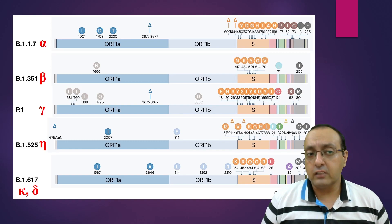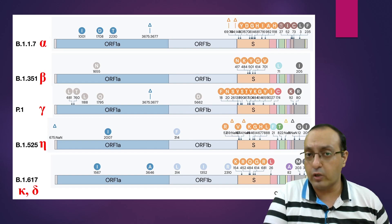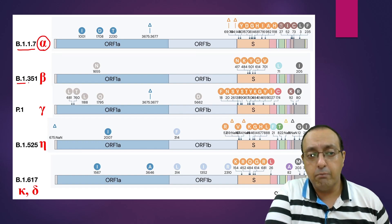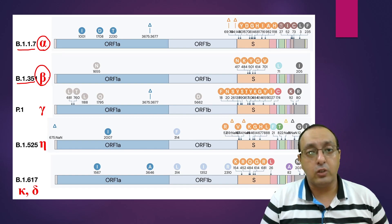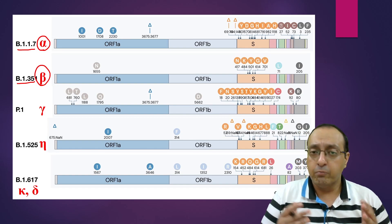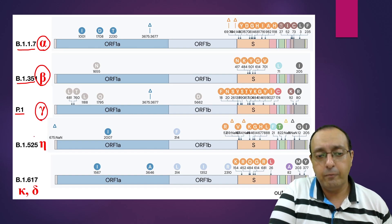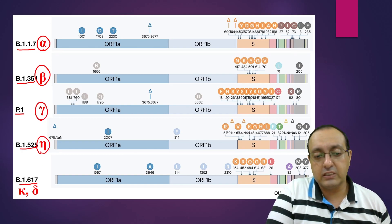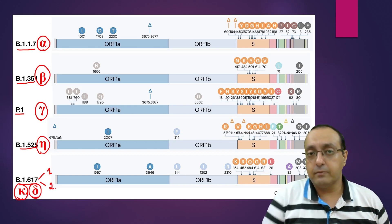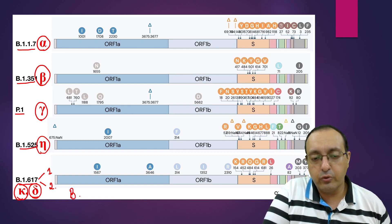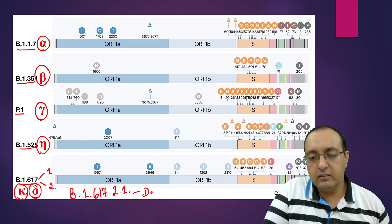For context, other coronavirus variants include the B.1.1.7 Alpha variant, B.1.351 Beta variant — earlier named by geographic location but now using official WHO nomenclature — the P.1 Gamma, B.1.525 Eta, and B.1.617 which has two lineages: Kappa and Delta. Delta has now mutated into B.1.617.2.1, which is the Delta Plus variant — a further sub-lineage of the Delta lineage.